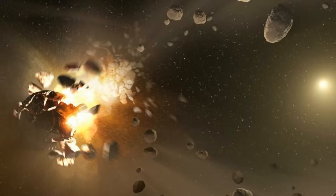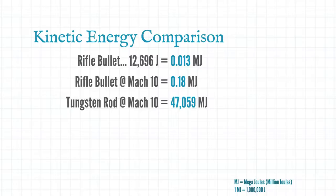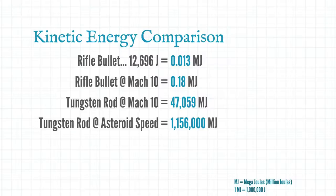Pretty powerful stuff but we're still not thinking spacey enough. A typical asteroid impacts the earth at around 17 kilometers per second. So let's feed these numbers into the magic formula. Using our tungsten rod suddenly we've increased our yield to 1 million megajoules.